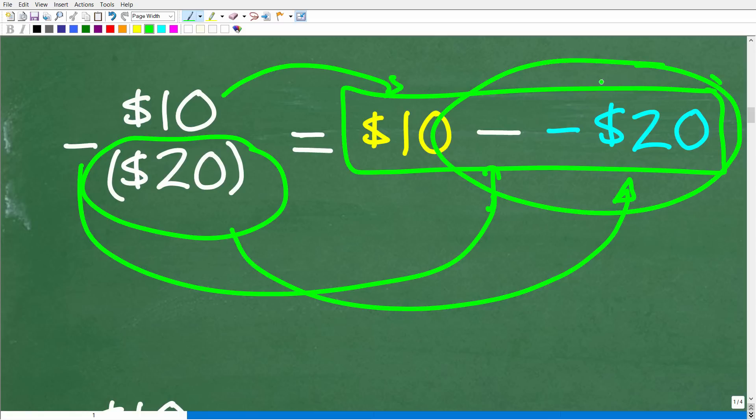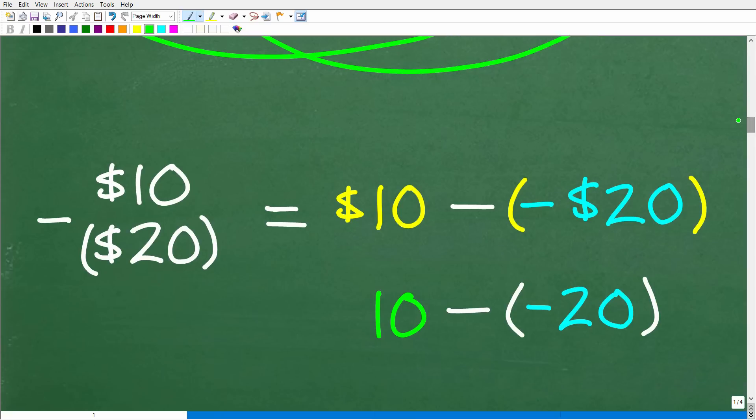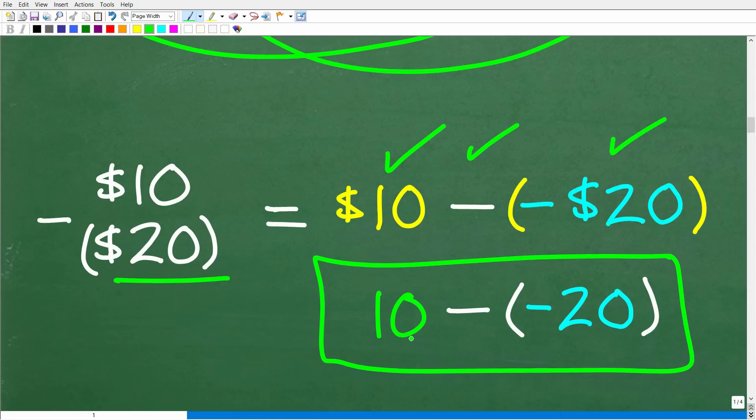Now this right here, this minus of a minus can be confusing. So we want to write this a little bit better from a mathematical standpoint. So we'll put parentheses around this negative value. So $10 minus a $20 in parentheses or a negative $20. We can write it like this. Okay, so from a mathematical standpoint, what we need to figure out is what 10 minus a negative 20 is. So if you know the answer to this right here, well, of course, I already told you the answer, but this is how we get to our final result. All right, so let's go ahead and take the next step and see how we subtract a number away from a negative value.